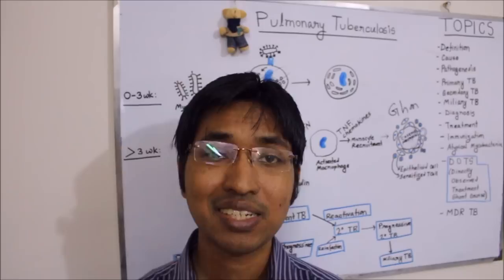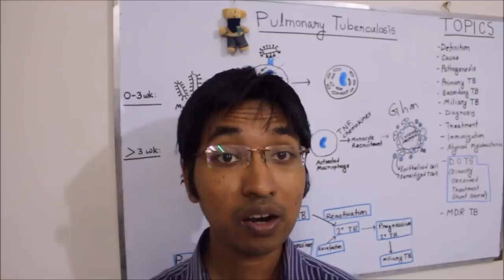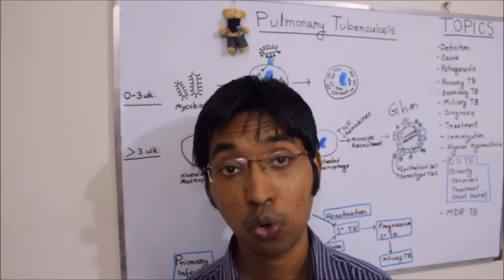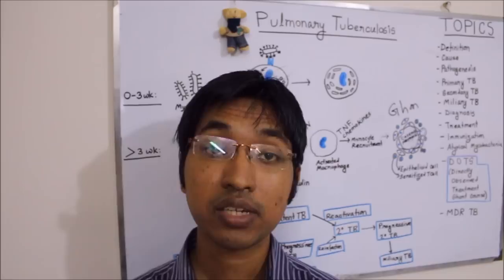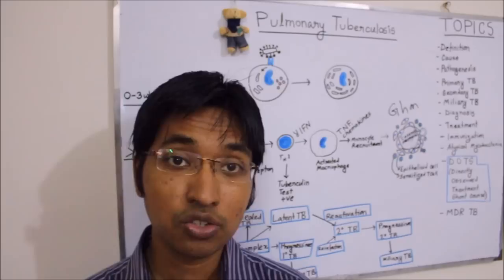classically we see 1 to 2 millimetre fine lesions throughout the entire lung field, having the appearance of millet seeds — from which we get the term miliary tuberculosis. Sometimes the lesions may be even coarser. In advanced cases there may also be a crackling sound on auscultation.